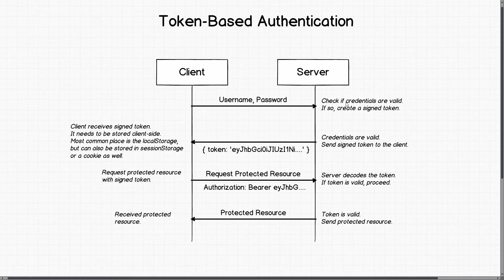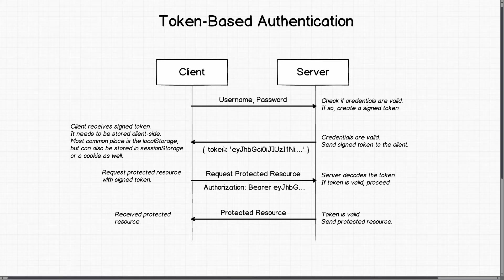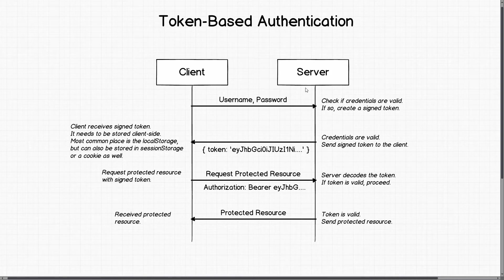We start again with the client sending credentials — username and password — to the server. The server checks if those credentials are valid. If so, this time the server creates a signed token rather than a session. The credentials are valid in this example, so the server creates that signed token and sends it back to the client. This is one of the first key differences from cookie-based authentication.